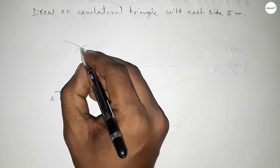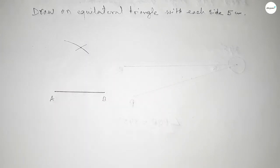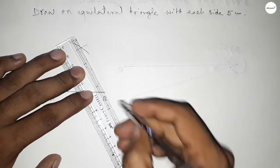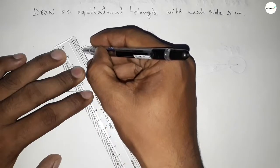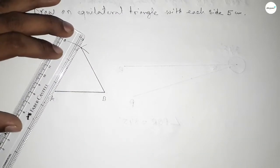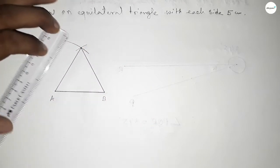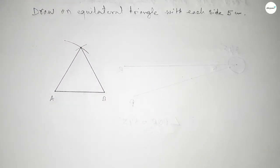Now joining this side and also joining this side to get an equilateral triangle with each side 5 centimeters, and this is point C.